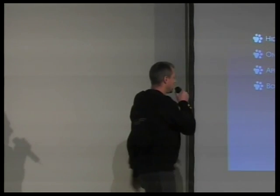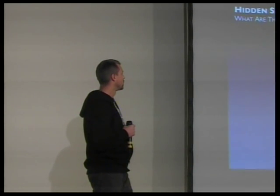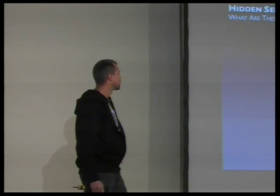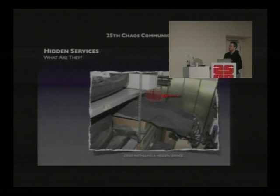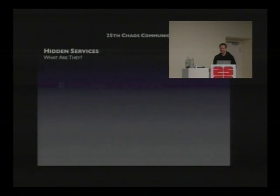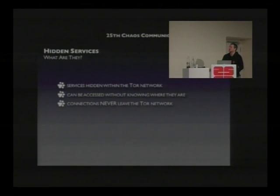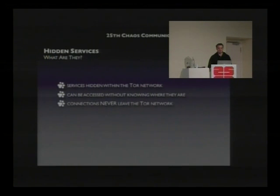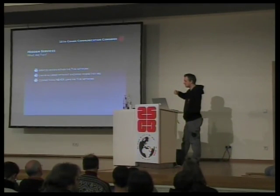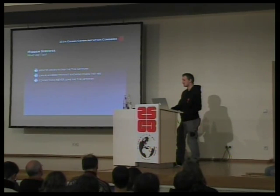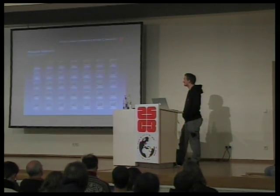Let's have a look at hidden services. A hidden service is a location-hidden service inside the Tor network — you can only access it through the Tor network. A few months ago we installed such a service in a garage somewhere, and it is also physically hidden. Hidden services within the Tor network can be accessed without knowing where they are. The connections typically stay within Tor and do not need the typical exit nodes.